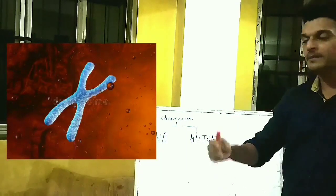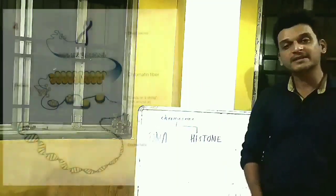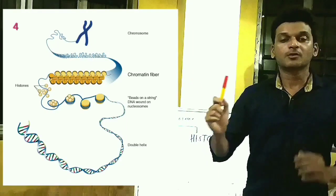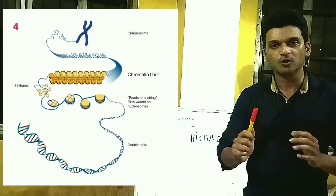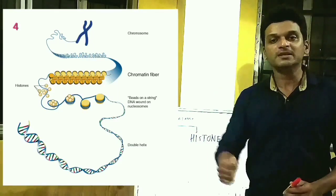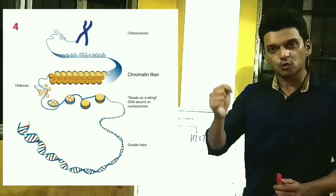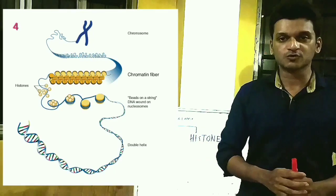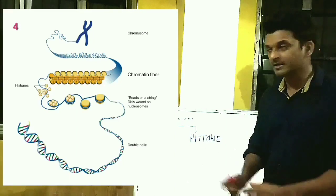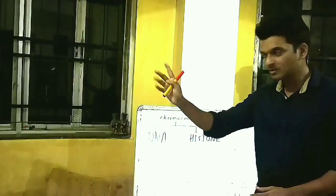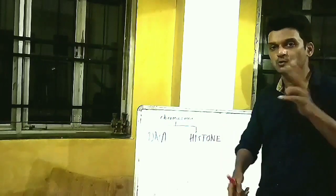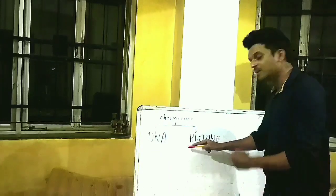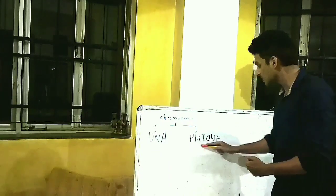Now let's switch to the second diagram. On the top of the diagram you can see a single chromosome is present. Imagine you are holding one arm of that chromosome and pulling it so that the chromosome is unwound and separated. When that chromosome starts unwinding, as shown in the diagram, it is separated into two components — one component is the DNA itself, and the second component is a protein molecule.